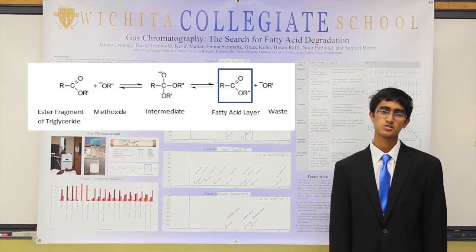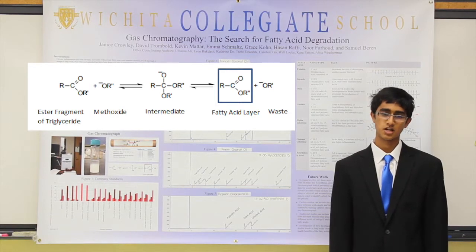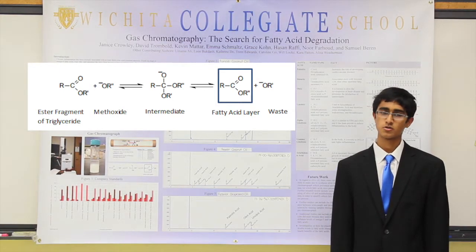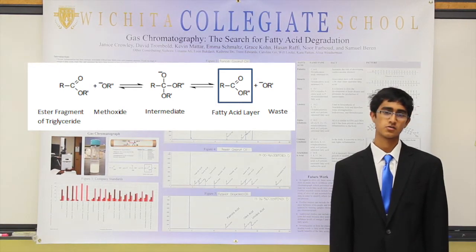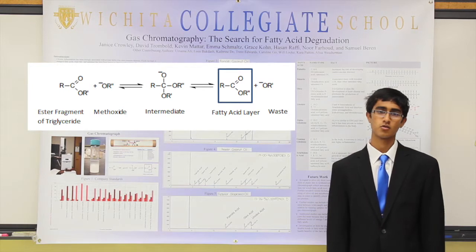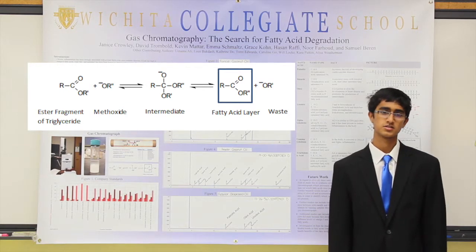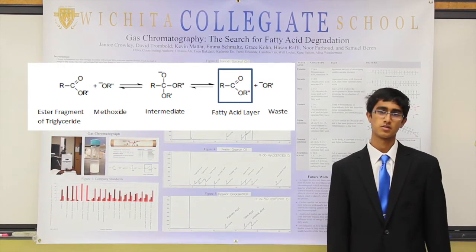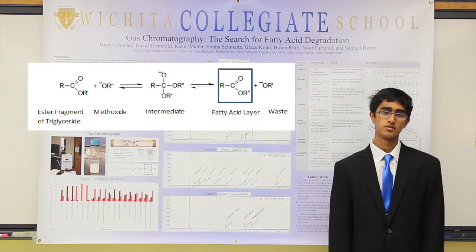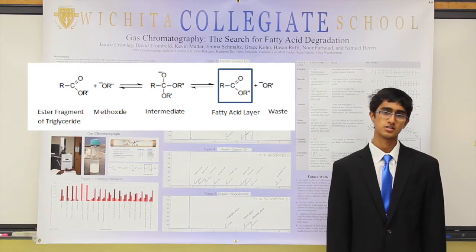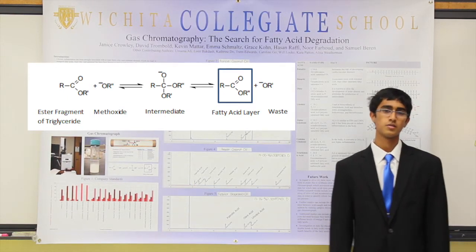We made sure there was an excess of alcohol so it would shift in that direction, and when it does that it forms a methyl ester and a waste methoxide solution. The methyl esters are what we want to inject into the GC.